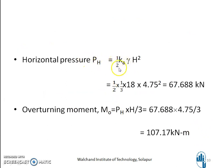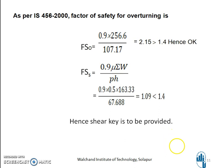The horizontal force pH = (1/2) × Ka × γ × H² = (1/2) × (1/3) × 18 × 4.75² = 67.688 kN. The overturning moment M_O = pH × H/3 = 107.17 kN·m. As per IS 456-2000, the factor of safety for overturning FSO = 0.9 × (stabilizing moment) / (overturning moment) = 0.9 × 256.6 / 107.17 = 2.15, which is greater than 1.4, hence it is safe.